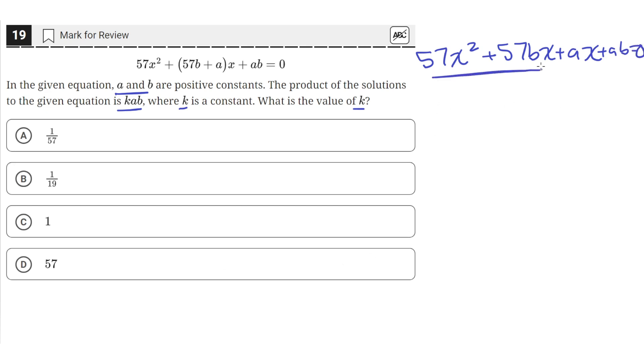From these first two terms, we can factor out 57x. When we factor out 57x, we'll be left with x + b. And then the second two terms, we can factor out an a, so we'll be left with a times (x + b), which equals 0.